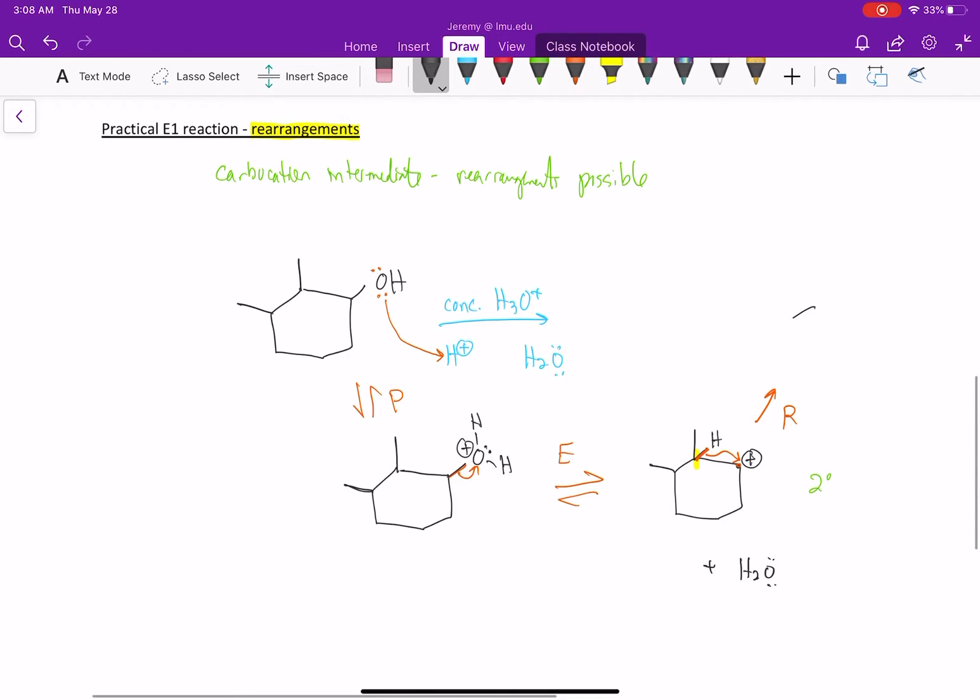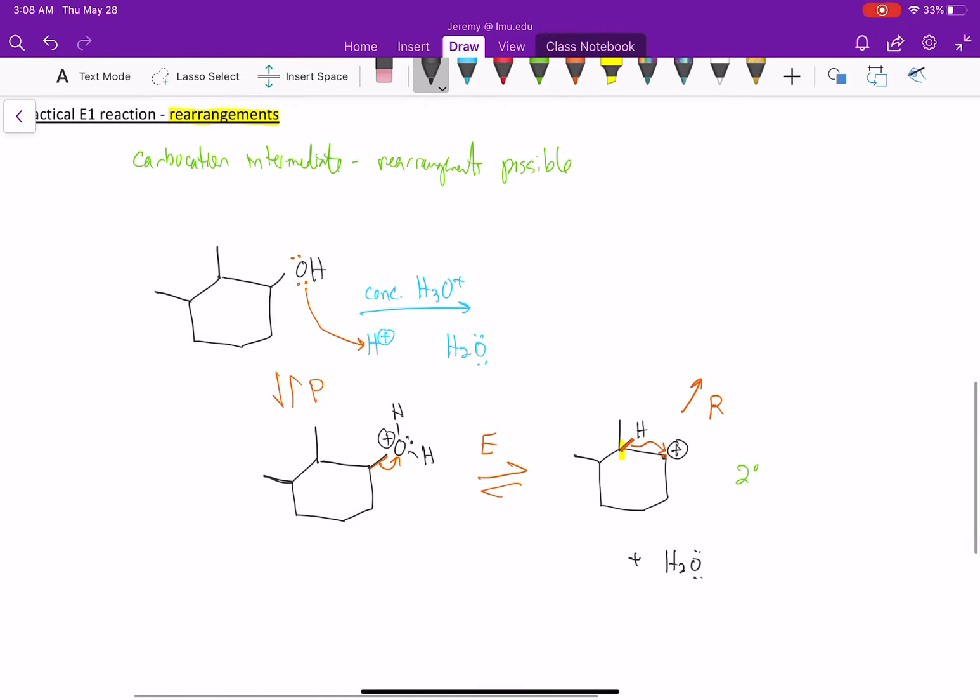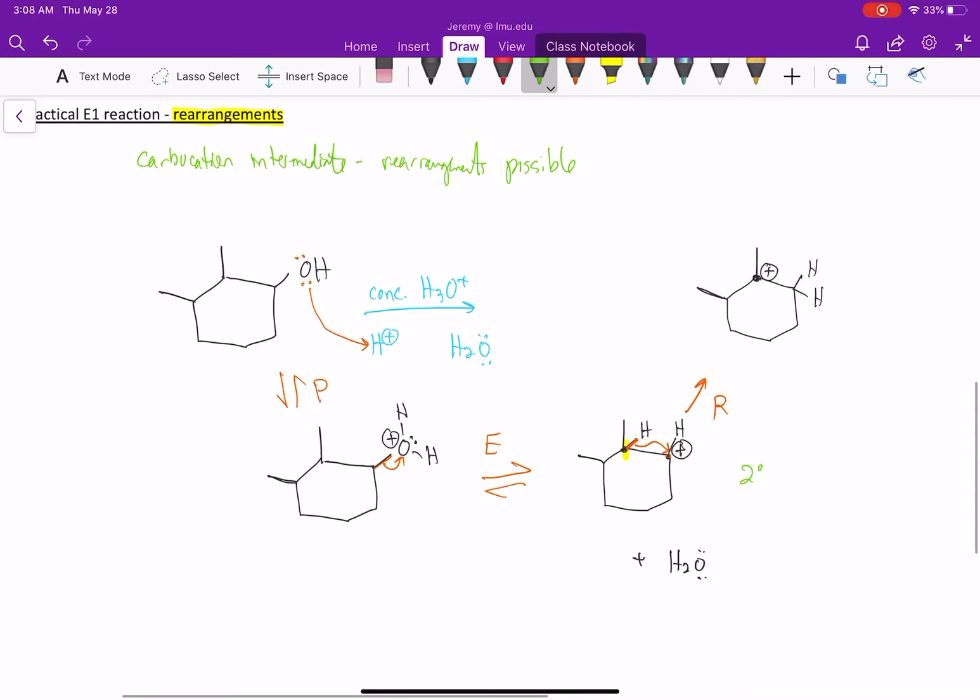So the structure we get here... let's just draw this a little bit better. There was one hydrogen here, so that carbon now has two hydrogens. This carbon here is missing its hydrogen. So this carbon now has our positive charge. So what type of carbocation do we have here? We now have a tertiary carbocation, which is more stable than the secondary. That's why this rearrangement occurs.